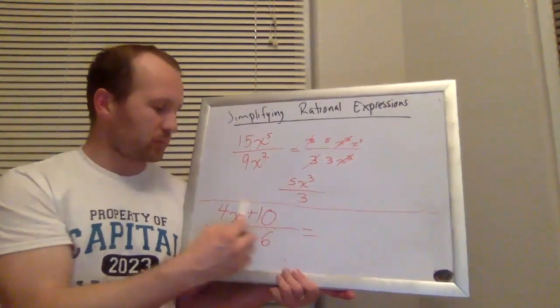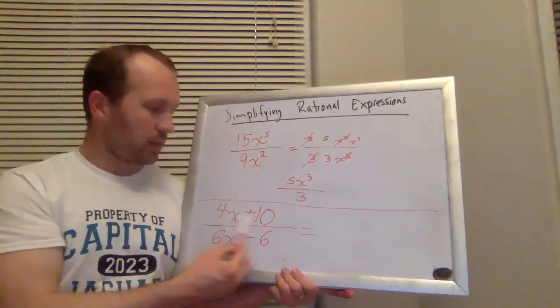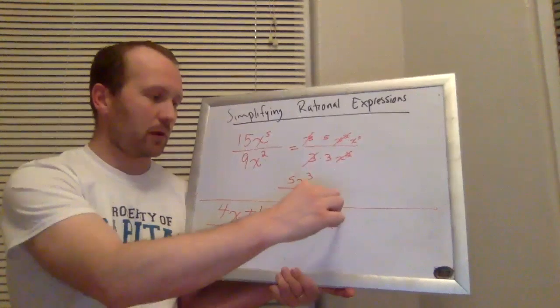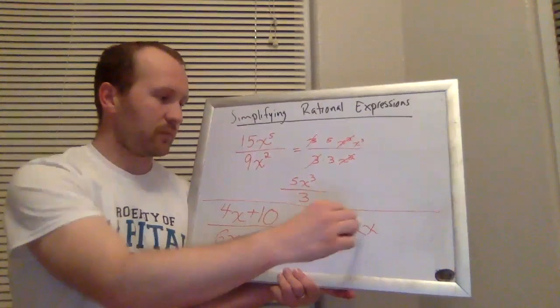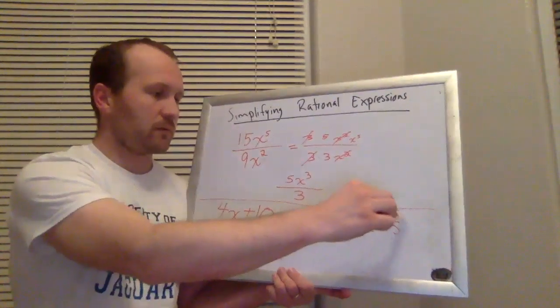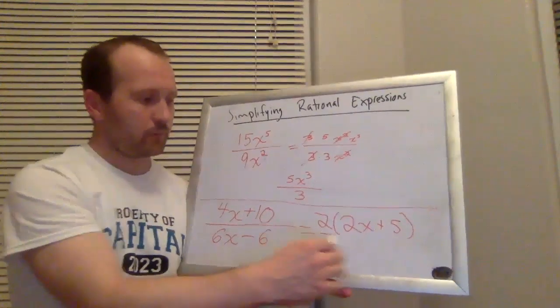What is a factor of 4x plus 10? Well, they both have a 2 in common. So I pull out 2. I'm left with 2 times 2x would give me the 4x. 2 times 5 would give me the 10.